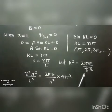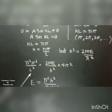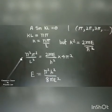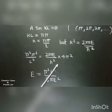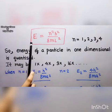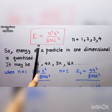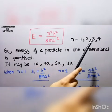Putting k equal to n pi over l into k squared equal to 2mE over h-bar squared, and substituting h-bar equal to h over 2 pi, we compare the two expressions. With k squared equal to n squared pi squared over l squared, and k squared equal to 2mE divided by h squared over 4 pi squared, we solve for the energy: E equal to n squared h squared divided by 8 m l squared.